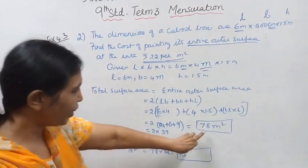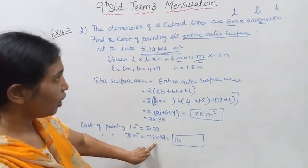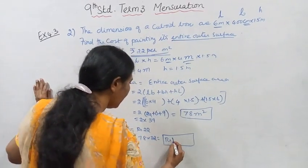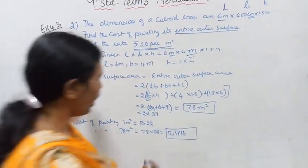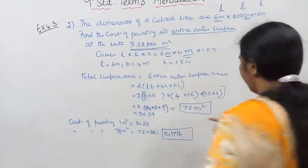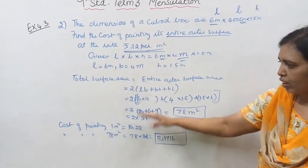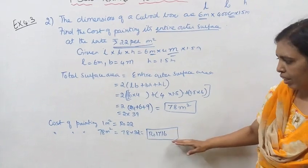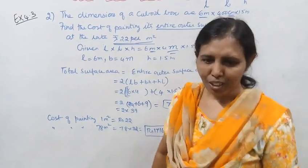78 into 22 equals 1716 rupees. This is the answer. The cost of painting 1 meter square is 22 rupees, so cost of painting 78 meters square is the final answer.